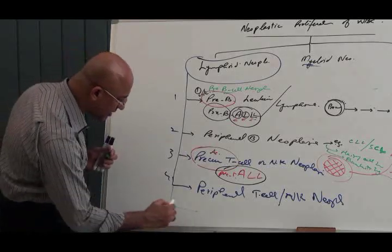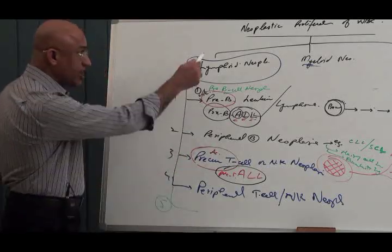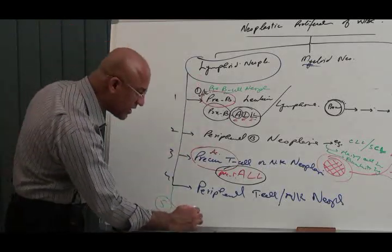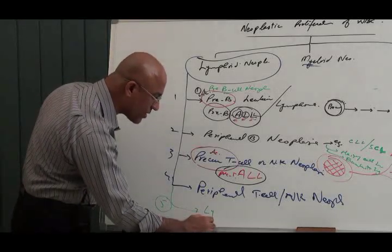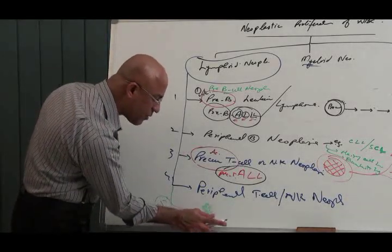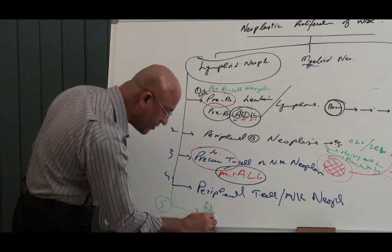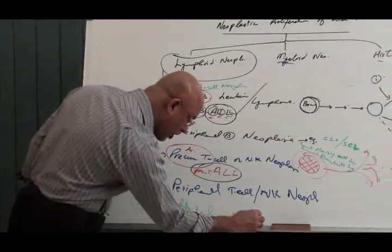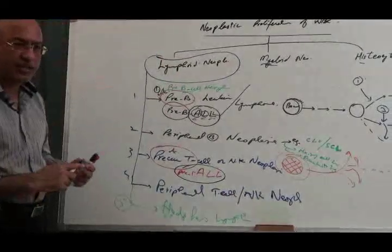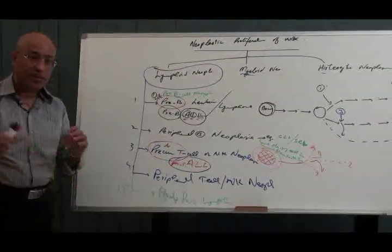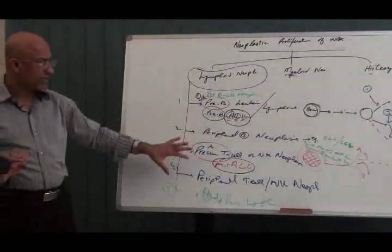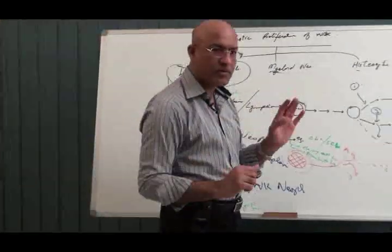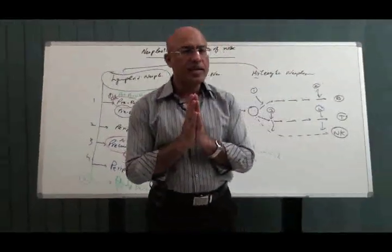Then last but not least, last category here is these are lymphoid tumors. Last category here is lymphomas. What is this? Hodgkin's lymphoma. This is a different category. About Hodgkin's lymphoma we have already recorded the lecture that is present in video library right now. I will make it last revision of this.